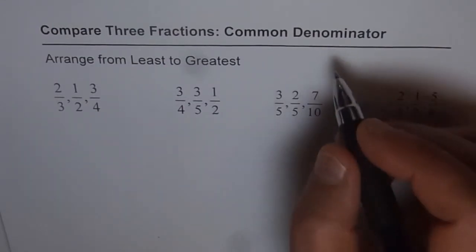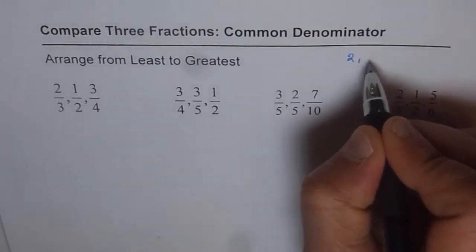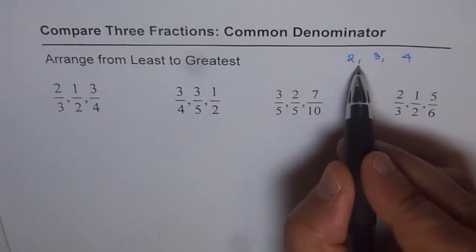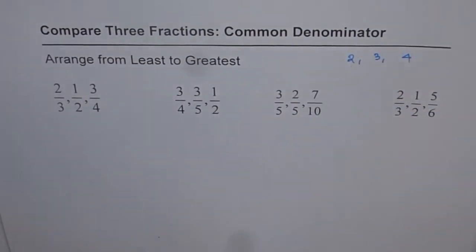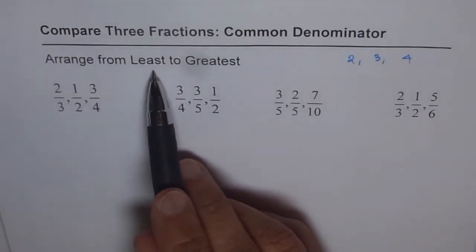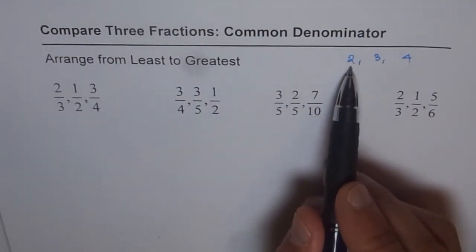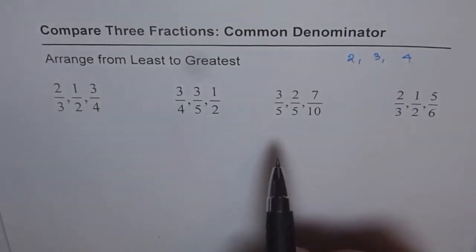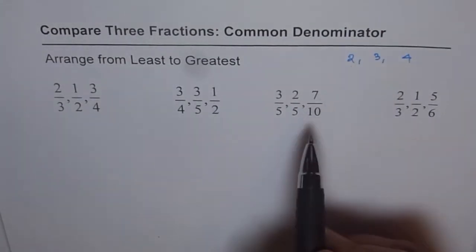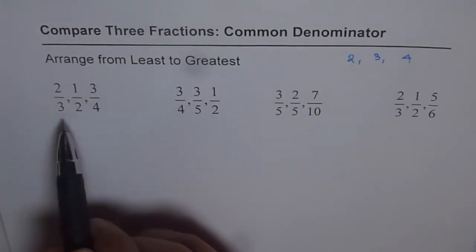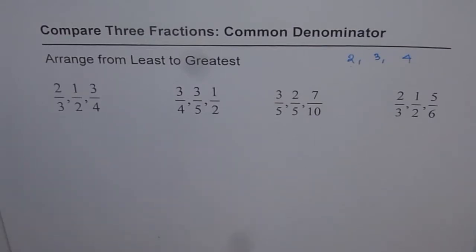For example, if I write the numbers 2, 3, 4, this is from least to greatest. That is what we mean when we say arrange them from least to greatest. The lowest number in these three is 2 and the highest is 4, so that is the order in which they are arranged. Same is the case with fractions — we can arrange them from least to greatest.